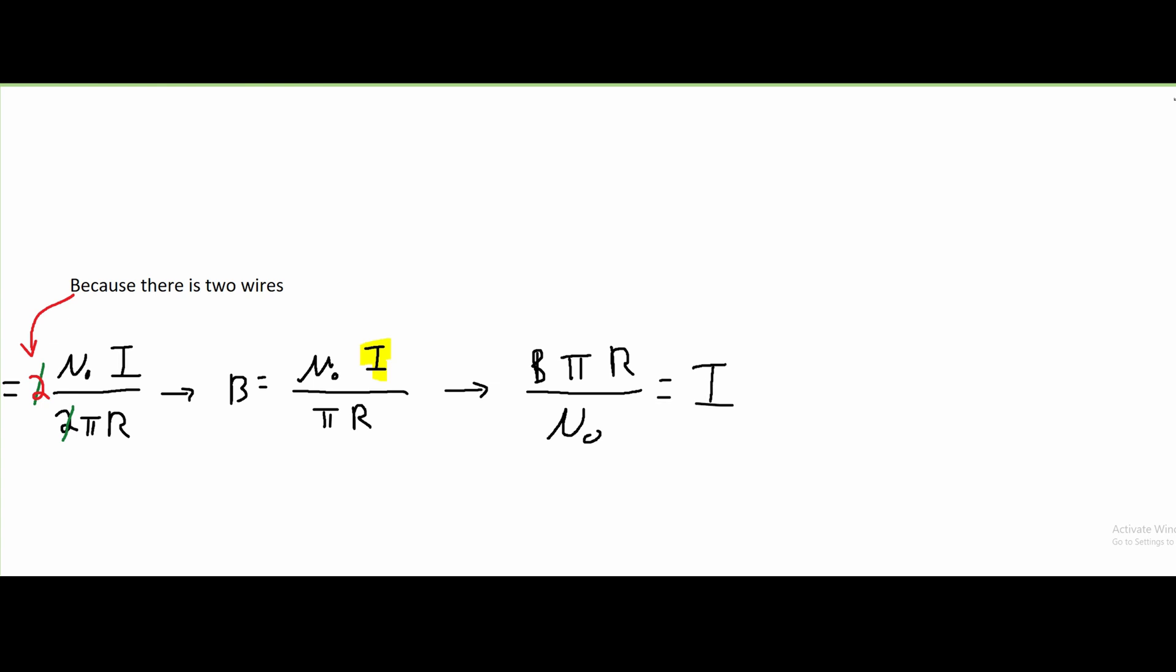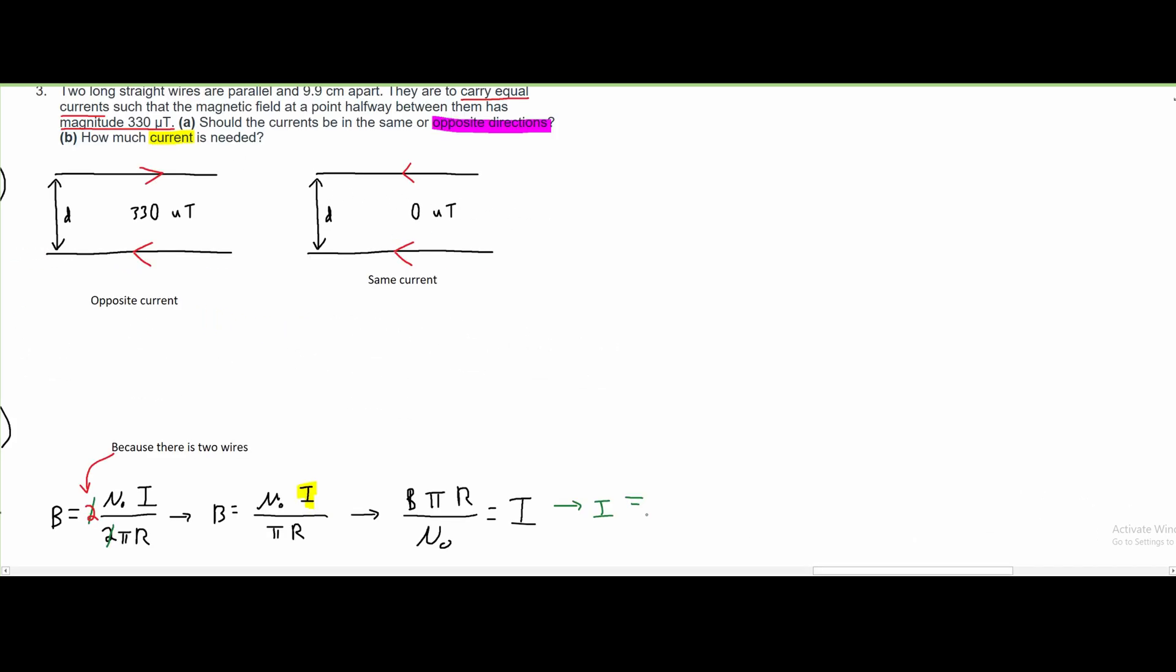Now we can start plugging in our values. First, we are putting in our B, the magnetic field, and we are given 330 micro teslas. We need to convert this into teslas, so we're going to have 330 times 10 to the negative 6 teslas. We're multiplying this by π, and then our R.